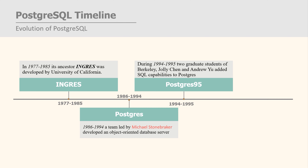Later, during 1994 to 1995, two graduate students of Berkeley, Jolly Chen and Andrew Yu, added SQL compatibility to Postgres and named this project Postgres95.